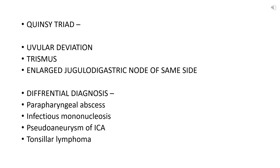The Quincy triad consists of three features: uvular deviation towards the healthy side, trismus, and enlarged jugulodigastric lymph node on the same side as the abscess. Differential diagnoses include parapharyngeal abscess, infectious mononucleosis, pseudoaneurysm of the internal carotid artery, and neoplasms — of which tonsillar lymphoma is the most common.